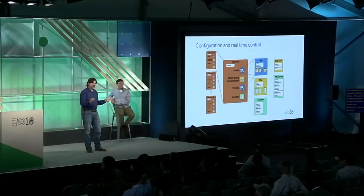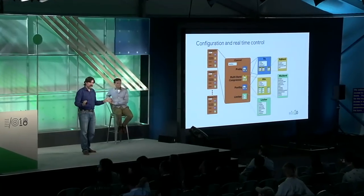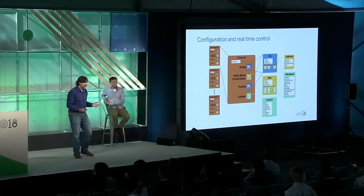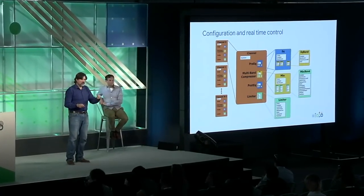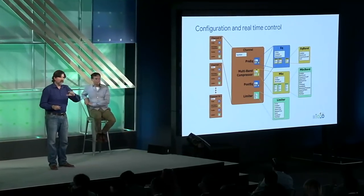The same applies to the multiband compressor — you can access it inside the channel and then access the parameters in each of the bands. For the limiter, there are no bands, only parameters — and you can access and control those as well.